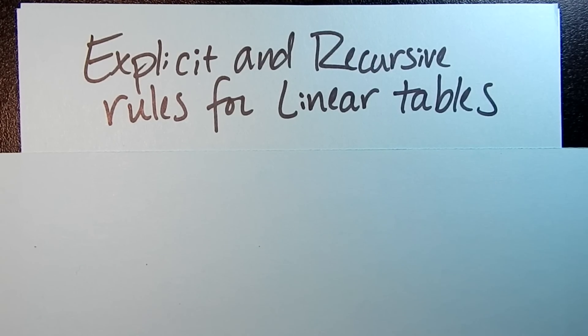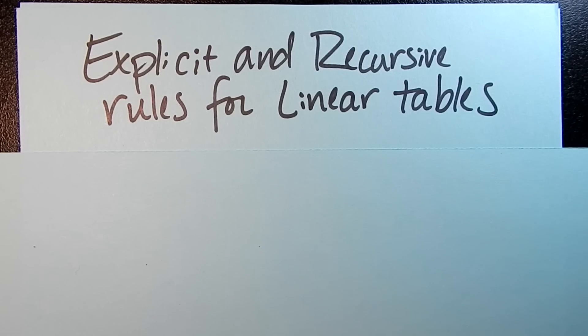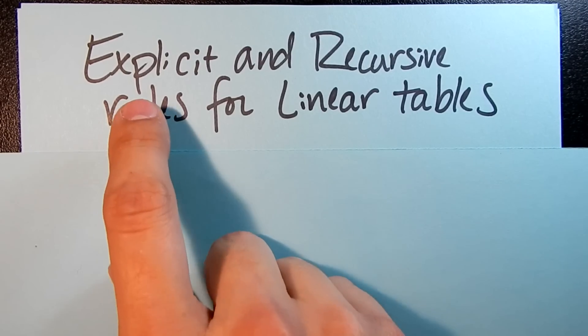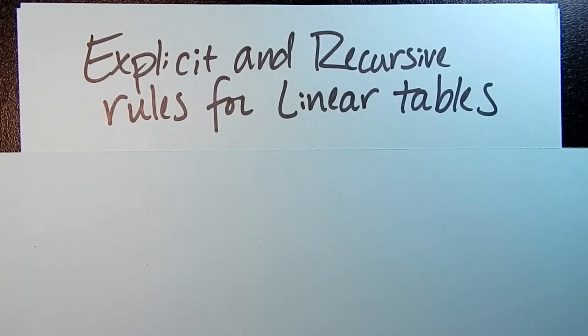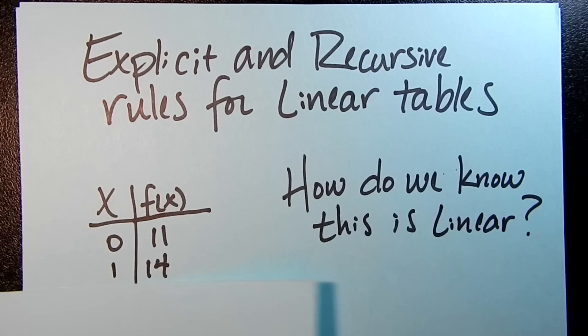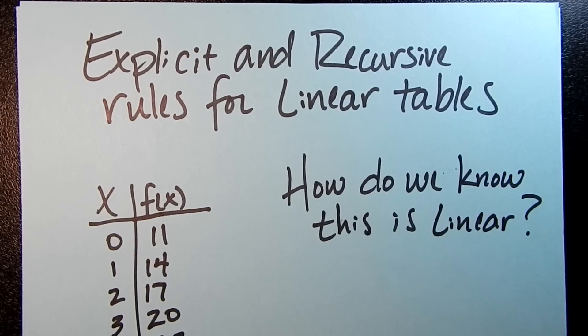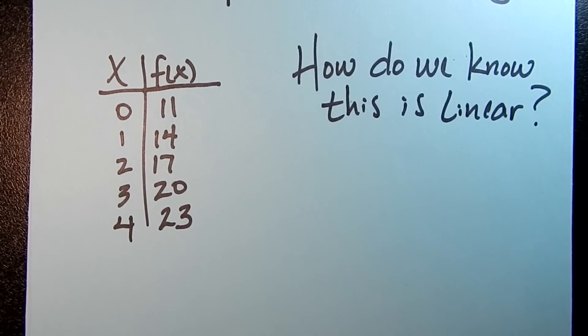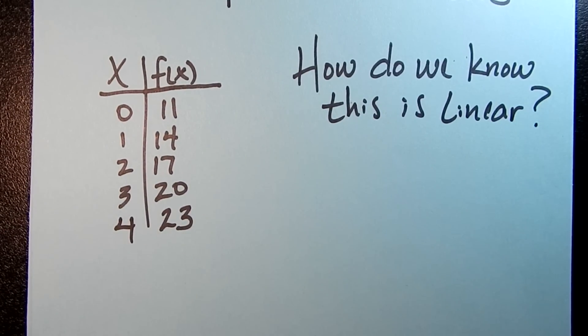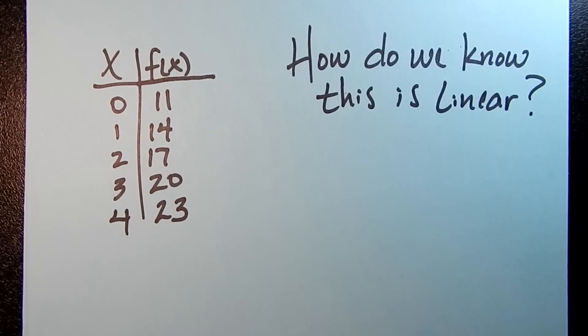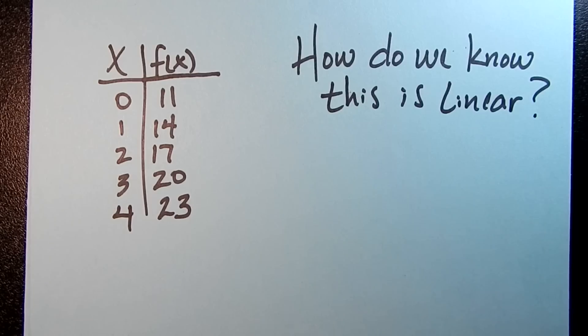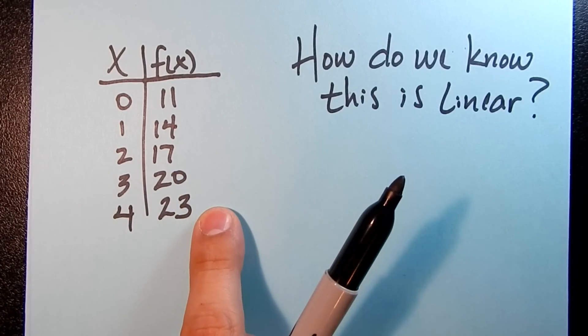It's a very fascinating pattern. A lot of really good math there. Some interesting things going on. But we're not talking about that today, perhaps in another video. So explicit and recursive rules for linear tables. So we're going to start off with a very straightforward table. And the first thing we have to ask ourselves is, how do we know that this table represents a linear function?